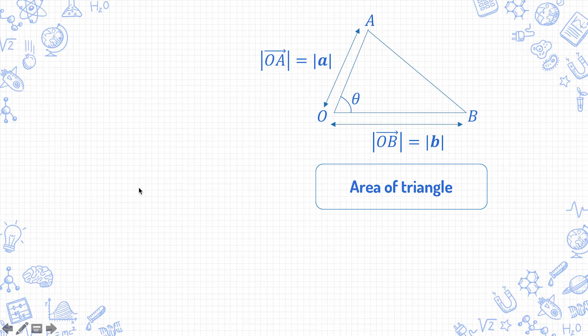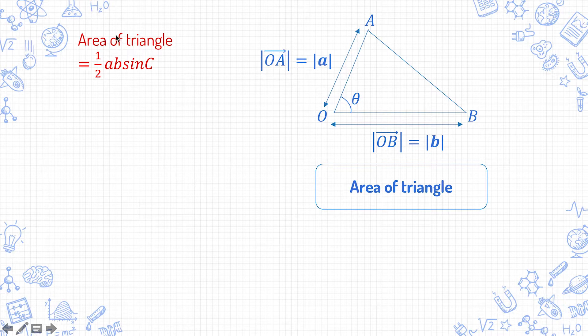Think of this in terms of how you would find the area of the triangle OAB if this was a purely geometry question. So in secondary school, you might have learned that the area of a triangle is half ab sinC, where a and b are the lengths of two sides of the triangle, and the big C is the angle in between those two sides.